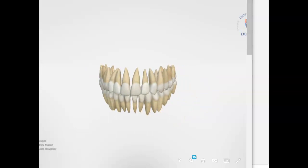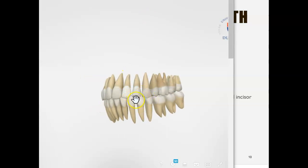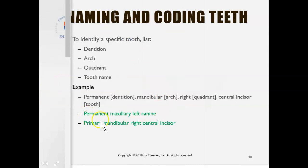So it's the left quadrant. Then we identify the tooth name — this is a canine because canines have that sharp point at the tip. So the full name is: permanent, maxillary, left, canine. That's how you name a tooth using these four criteria.